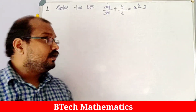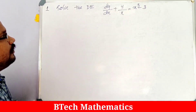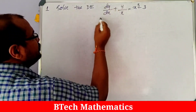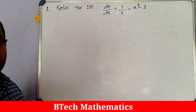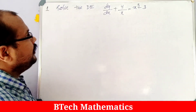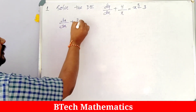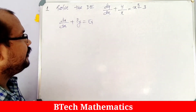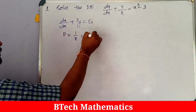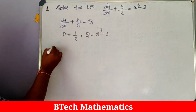Our first question: solve the differential equation dy/dx + y/x = x³ − 3. First, the coefficient of dy/dx must be 1 — it already is here. Comparing with dy/dx + Py = Q, we get P = 1/x and Q = x³ − 3.